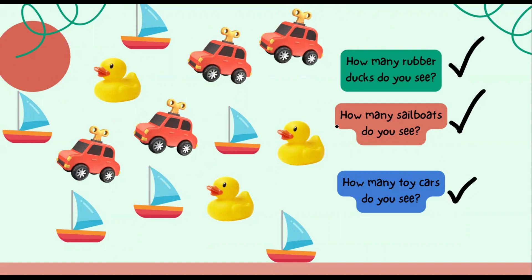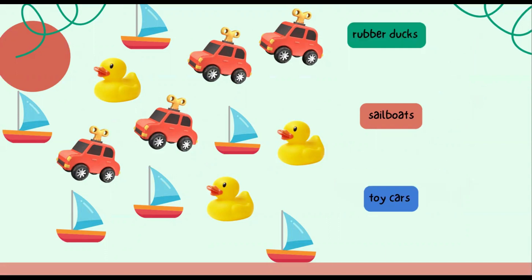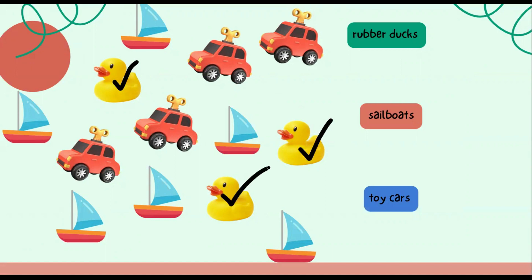Let's count together. Looking at our group, let's count the rubber ducks first. Are you ready? Count with Miss K. Here we go: one, two, three. We have three rubber ducks in this group. So underneath rubber ducks, let's put three.